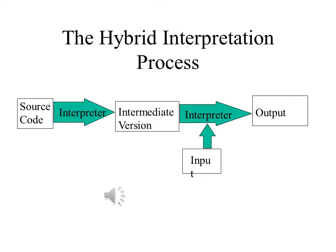The hybrid process has the interpreter do an initial translation, saving the program in an intermediate version that can be read more quickly than the original source code. From then on, it uses this intermediate version and a purely interpreted process for the remainder of the program run.